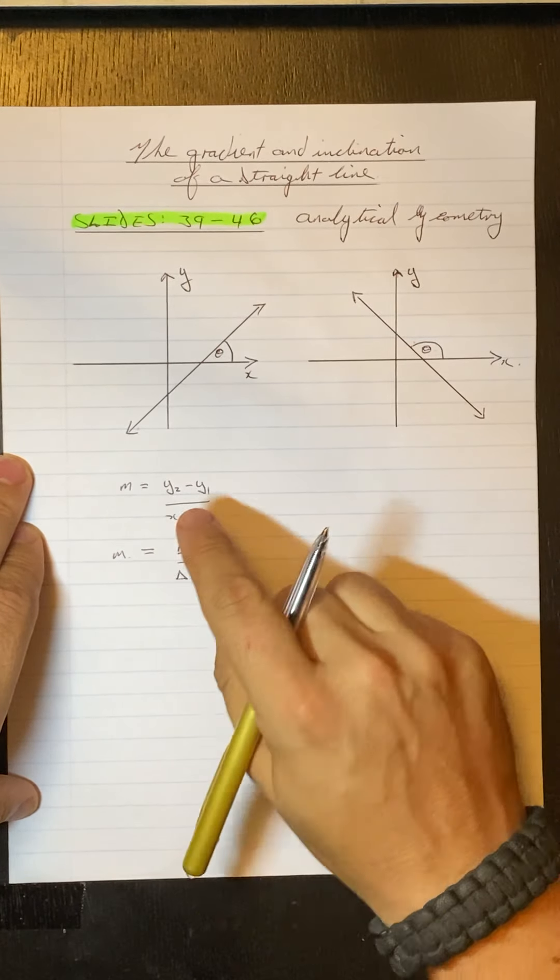So if we go through an example. Example 1. It's telling us determine, part 1, the gradient between these two points. It's A minus 3, 5. And our second point is B, 2, 0. So we have to find the gradient between these two points.